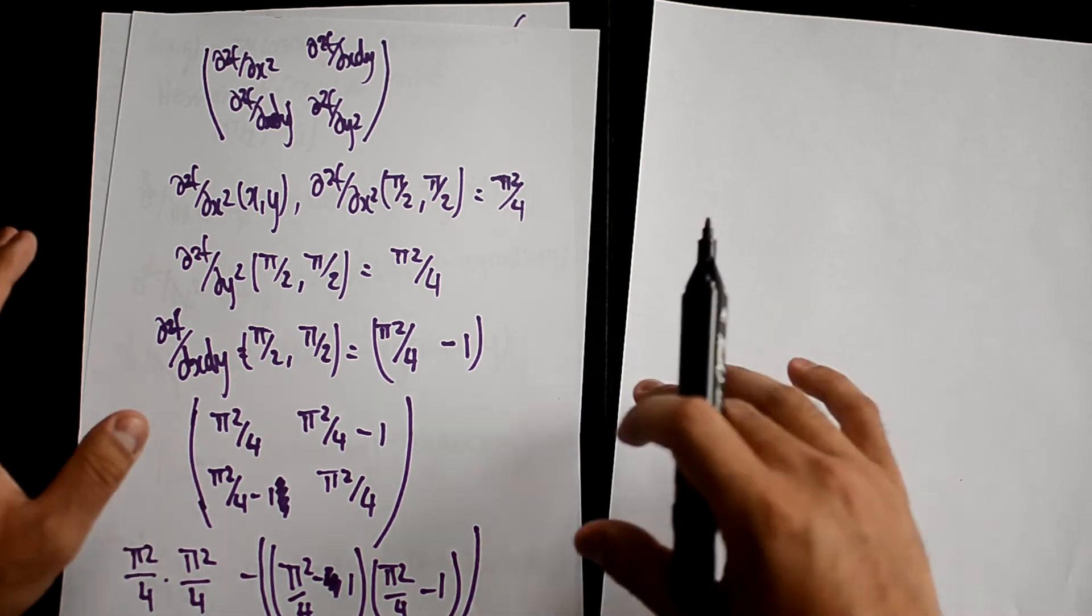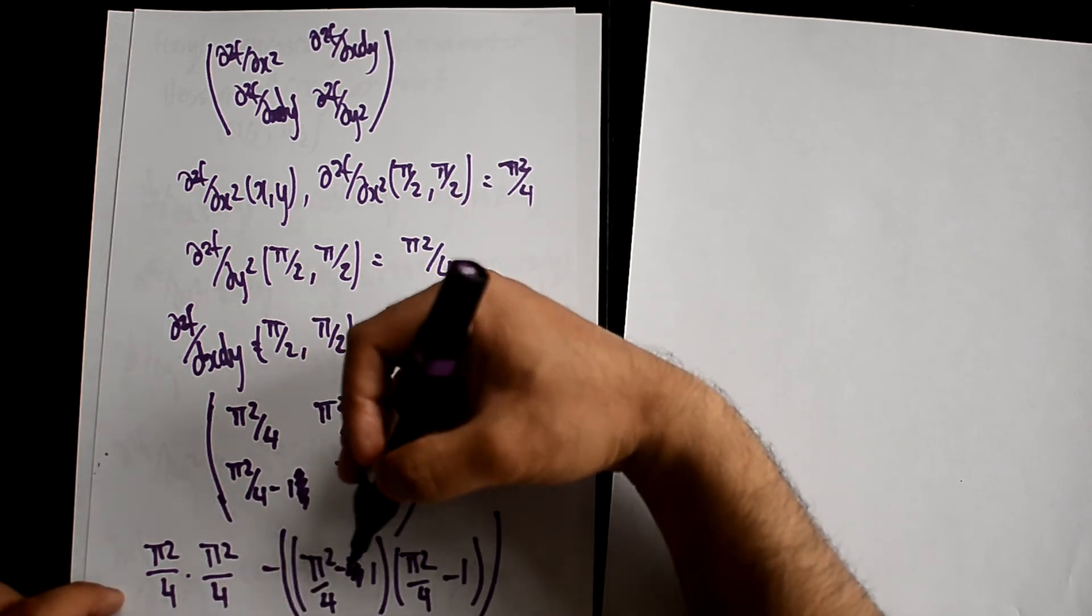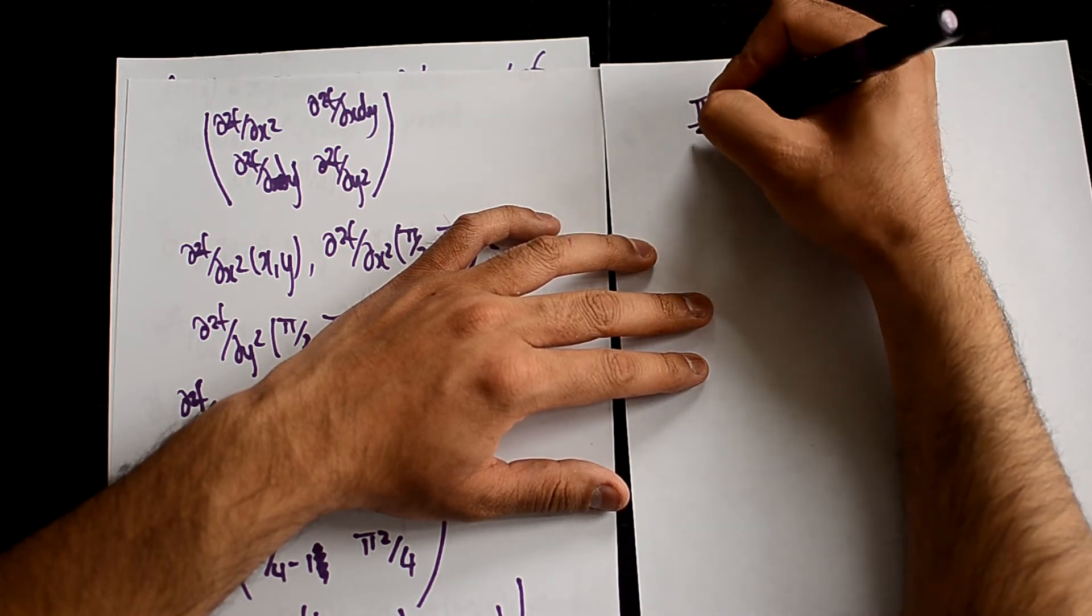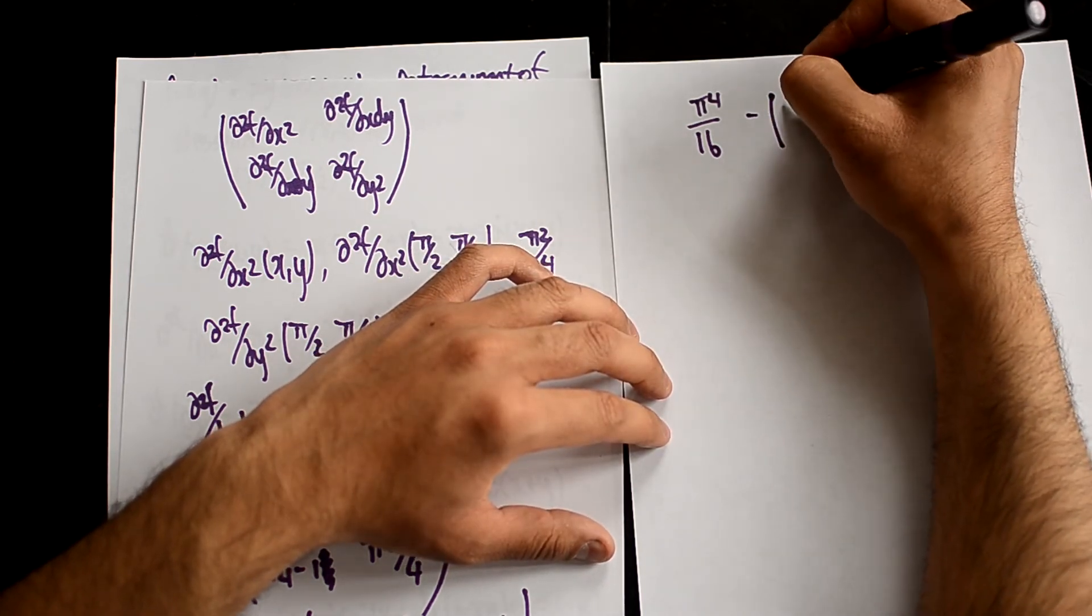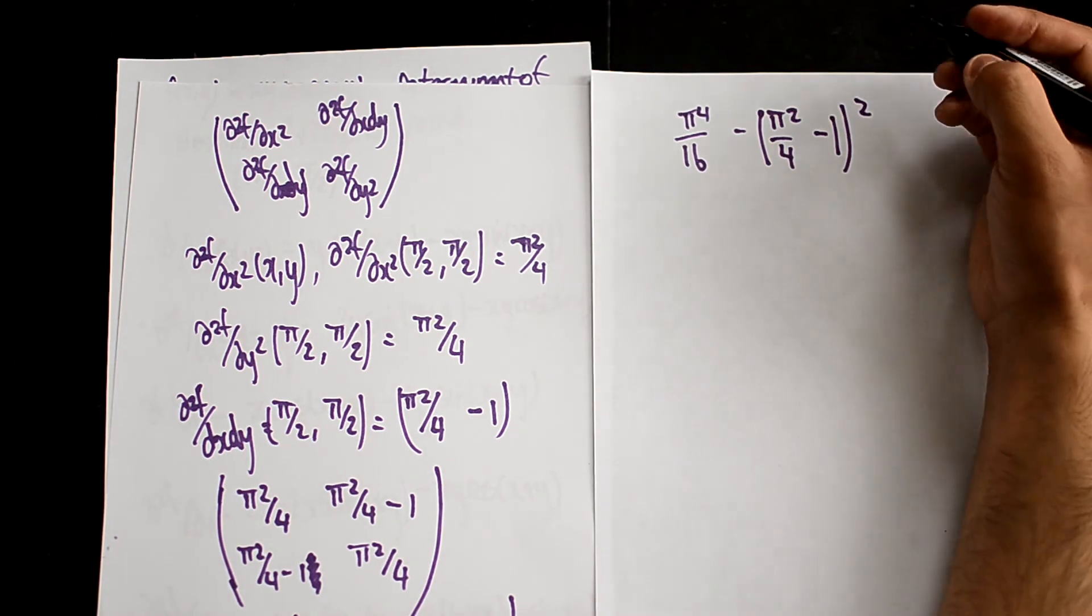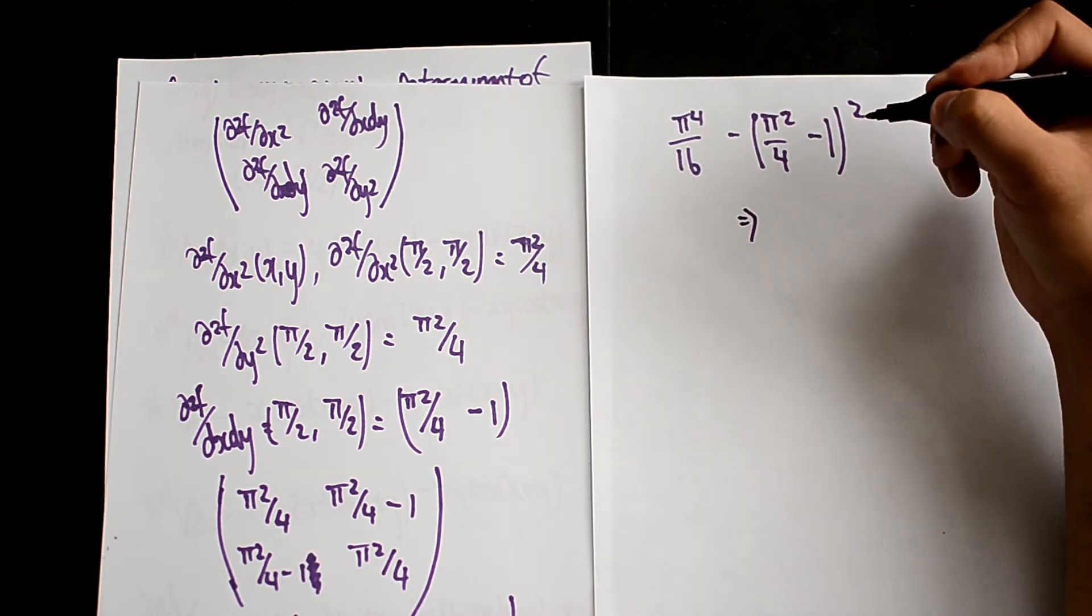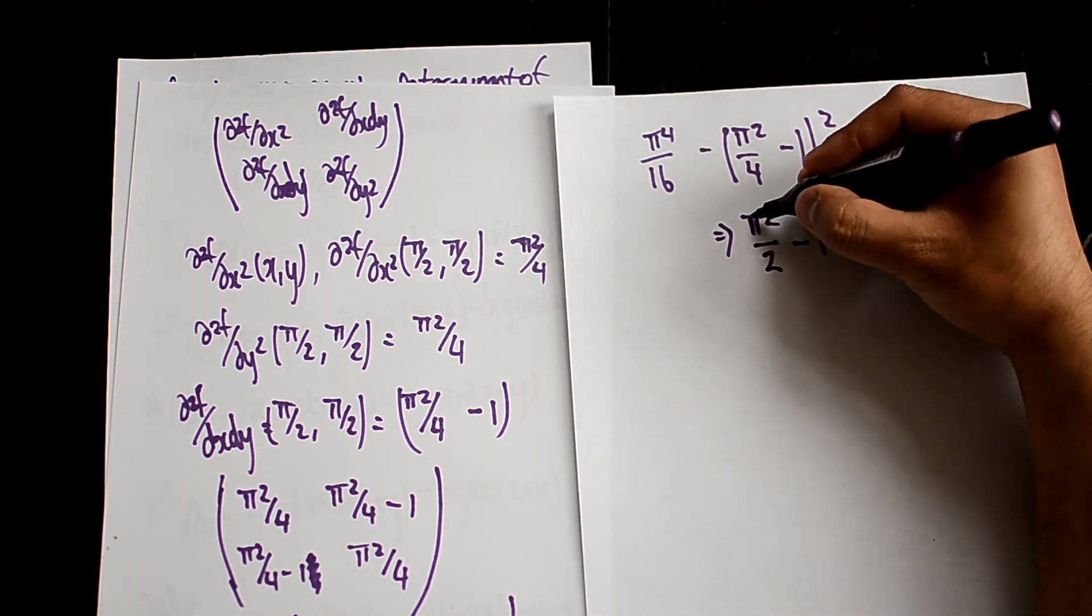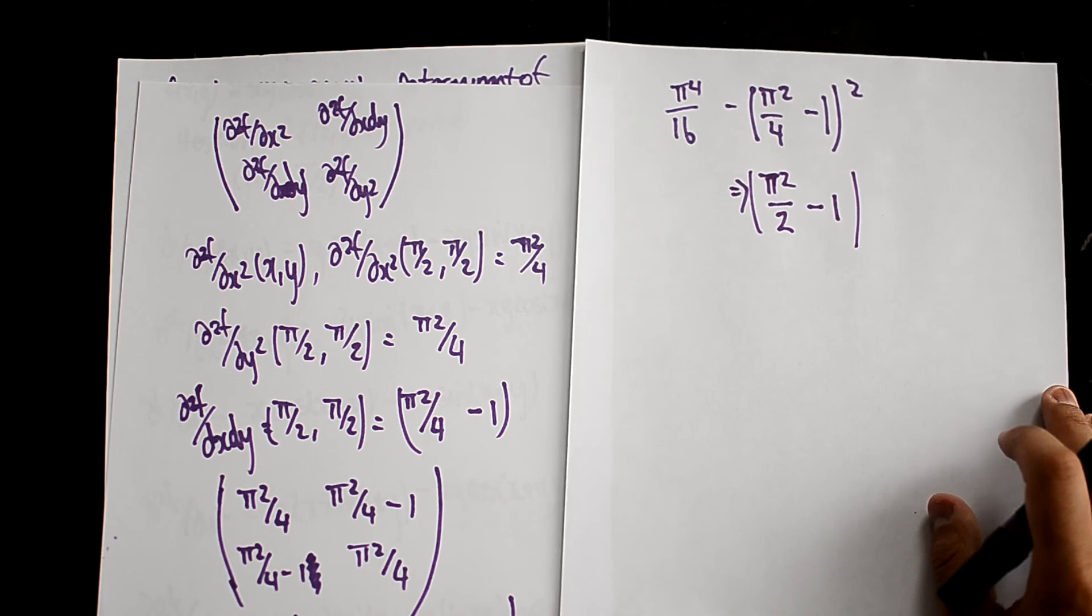So once we have that, we can multiply this all across. You're going to just literally multiply this by this. You multiply this across and you should get π⁴/16 here, minus... which then equals π²/2 - 1. And that is your answer. So that is actually your answer for calculating the determinant of the Hessian.